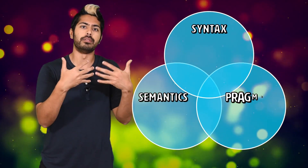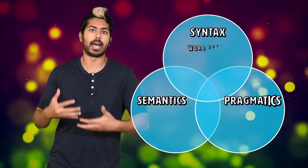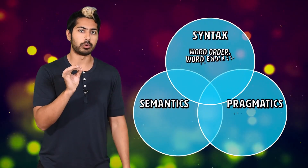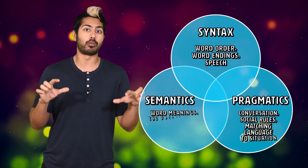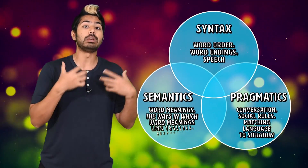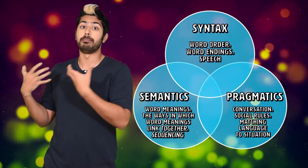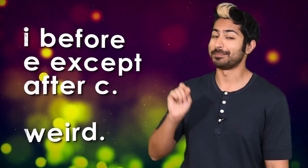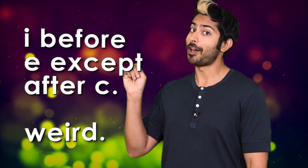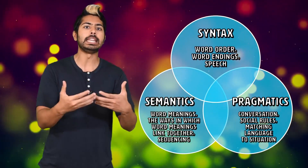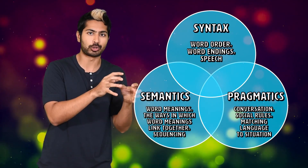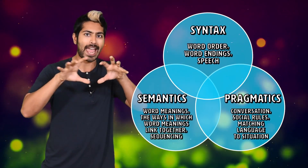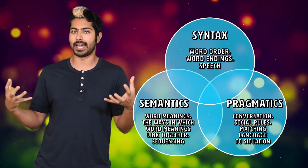Syntax describes the form of the language, usually specified by grammar. Natural language is much more complicated than the formal languages used for programming — there are many rules of syntax to abide by, like 'I before E except after C,' with 923 exceptions. Semantics describes the meaning of words or sentences of the language. And pragmatics describes how the words relate to the world at large — it's about considering their context.